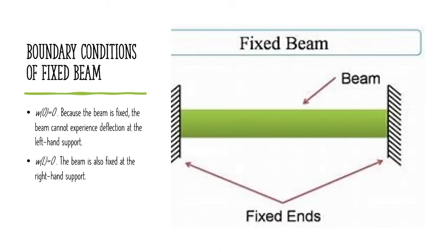For the boundary conditions of a fixed beam, on applying some force, there is mostly no deflection because the two ends are fixed and the material cannot bend or deflect until the force reaches its limit. At x equal to zero, the deflection is zero because it is fixed at the left-hand support. Similarly at the right-hand support, where the beam length is L, the beam is also fixed, so there is no deflection at that point either.